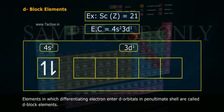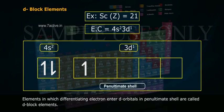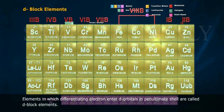Elements in which differentiating electron enter d-orbitals in penultimate shell are called d-block elements.